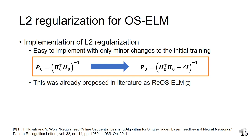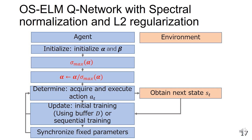This slide shows our OS-ELM Q-Network. It differs from the baseline OS-ELM Q-Network in two points. First, L2 regularization is used for OS-ELM. Second, σ_max(α) is calculated in the initialized phase, and α is divided by this value.